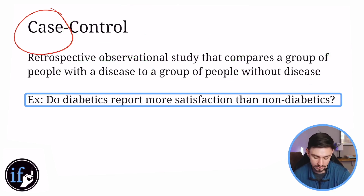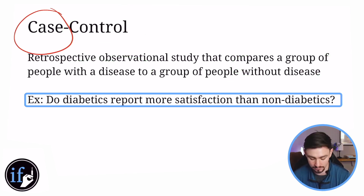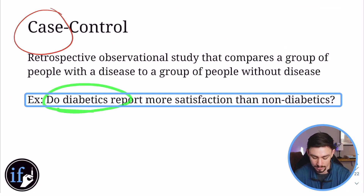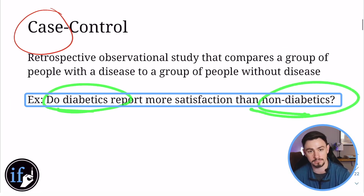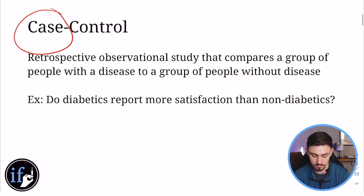A good example of case control is: do diabetics report more satisfaction than non-diabetics? You have your case — diabetics — and your control — non-diabetics. That's case control. Pretty simple.